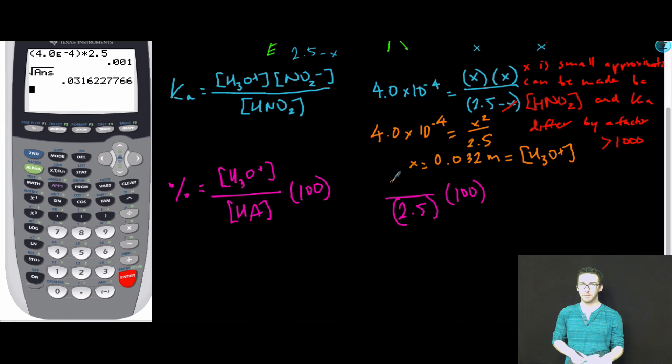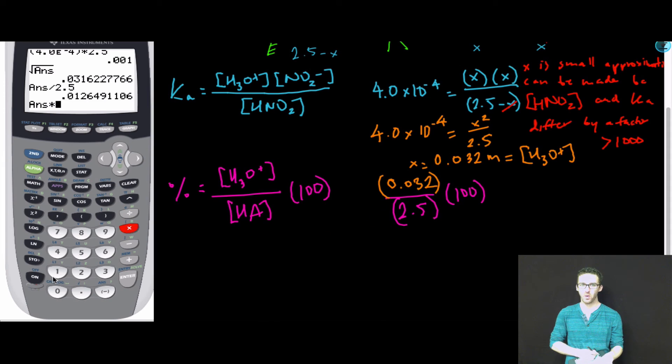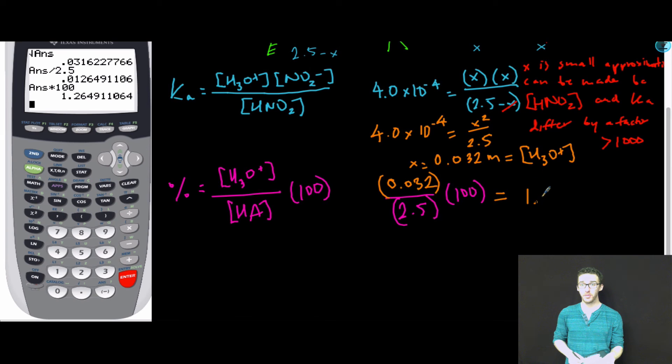I'm going to take that value and plug it in to my percent ionization formula. Then, I'm just going to solve. We get 1.3% ionized. Small percent ionization, something we should expect for a weak acid. We are done.